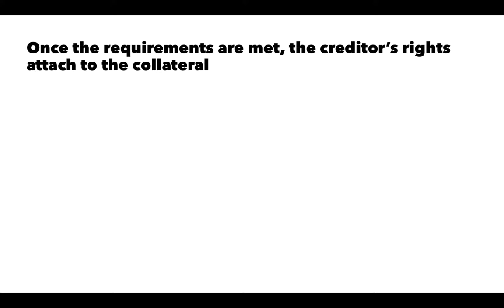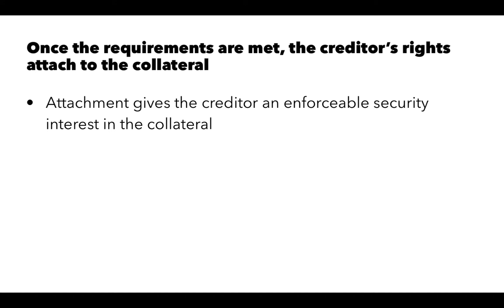Once those requirements are met, the creditor's rights are said to attach to the collateral. Attachment gives the creditor an enforceable security interest in the collateral. Once the rights have attached, the creditor has an enforceable security interest in that property — whether real or personal. They may not be the only party with an interest, but they certainly do have one.